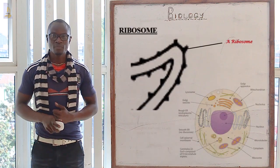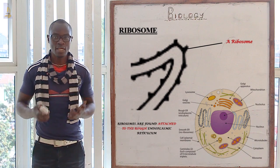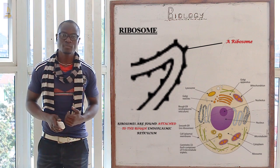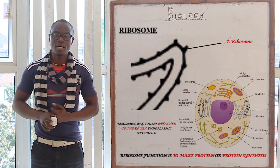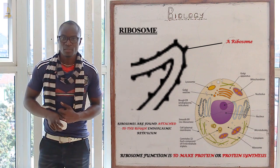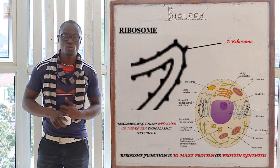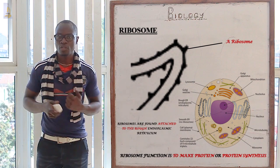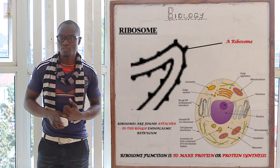Let's look at the ribosomes. These are very small structures which are located on the rough endoplasmic reticulum. The function of the ribosomes is that they synthesize or manufacture proteins. After proteins are manufactured, they enter into the rough endoplasmic reticulum for transportation to the nucleus and the nucleolus for different processes of the cell.